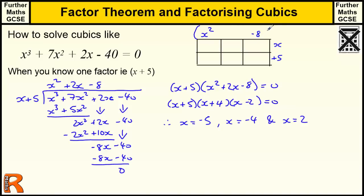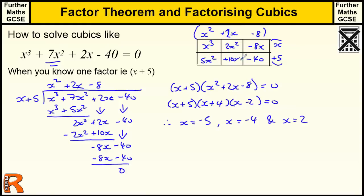When we multiply out this quadratic bracket by the linear bracket, we end up with lots of terms: an x³ term, 5 times x² gives 5x², then minus 8x, and minus 40. We want to make the original expression, so the missing term — something times x — must be 2, because 2x times x gives 2x², making our 7x² total. And just to check: 2x times plus 5 makes plus 10x, which adds to the minus 8x to give us 2x, and we've got the minus 40. So we get x² plus 2x minus 8.